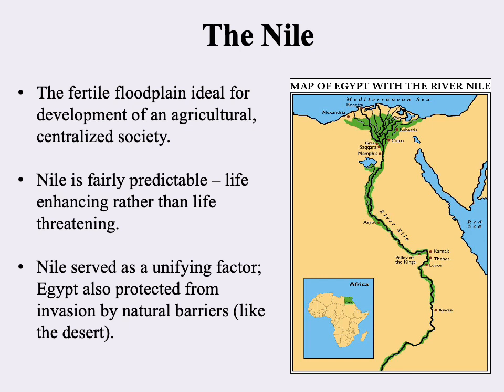Most early civilizations, but maybe not all, develop around major rivers. We have the Tigris and Euphrates in Mesopotamia; here we have the Nile. The Nile is very different from the Tigris and Euphrates — much more predictable, and related to that it becomes seen as a life-enhancing rather than life-threatening force.